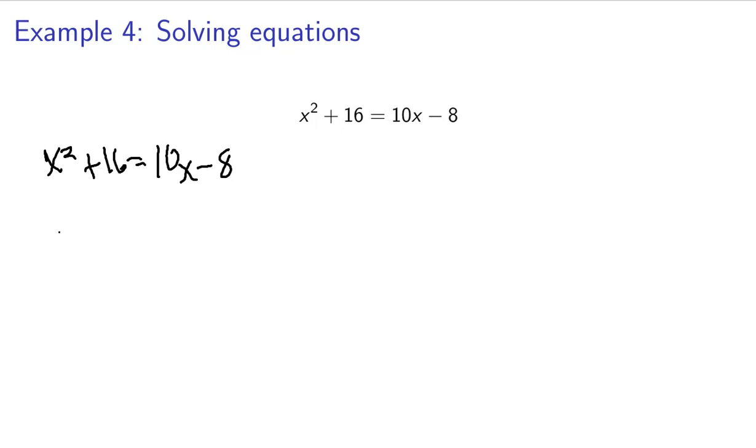So, the first thing I want to do is get everything to the left side of the equation. You could also get everything to the right side of the equation if you so prefer. It makes no difference. I subtract 10x from both sides, add 8 to both sides, but I also have like terms here.